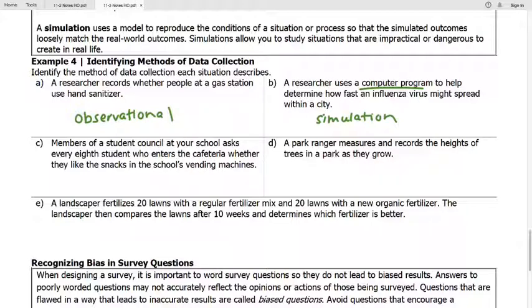Part C. Members of student council at your school ask every eighth student who enters the cafeteria whether they like the snacks in the school's vending machine. We are taking a survey of the population. A park ranger measures and records the heights of trees in the park as they grow. We're not doing anything to the trees. We are just measuring their heights over a course of time. This is observational.